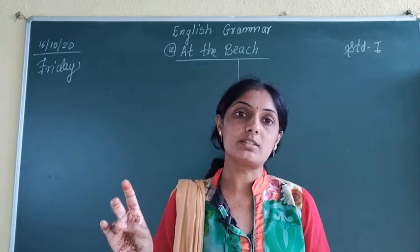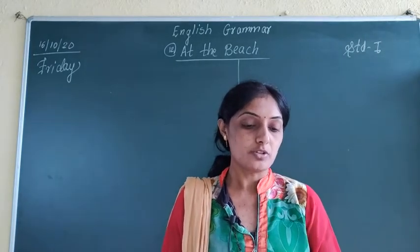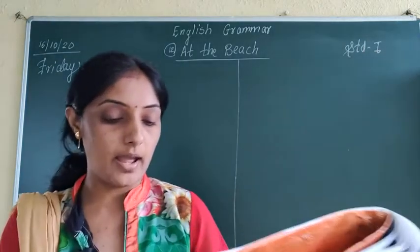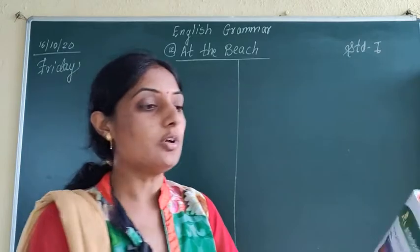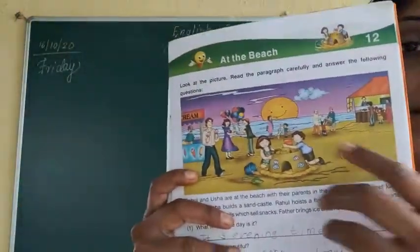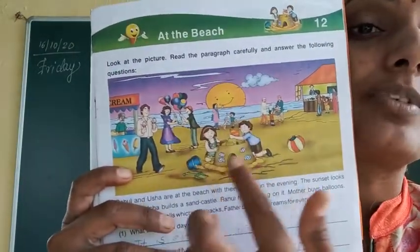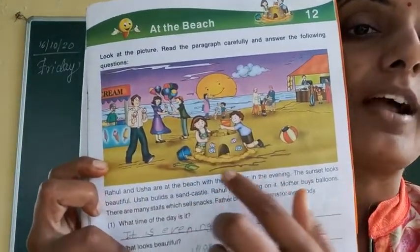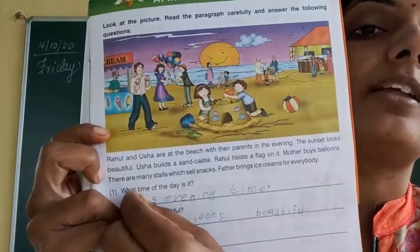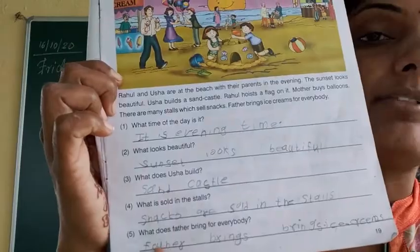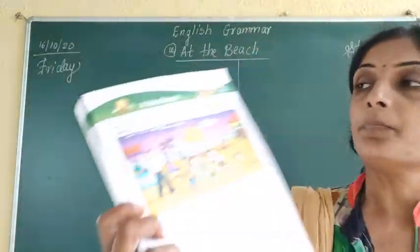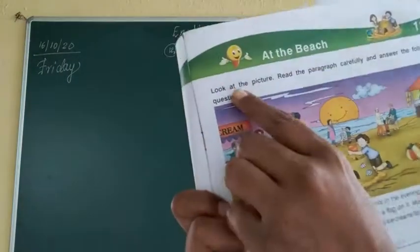Today we are going to study lesson number 12: 'At the Beach.' I know you don't have books with you, but here is a picture. What we have to do is look at this picture, read the paragraph carefully, and then answer the five questions that are given.